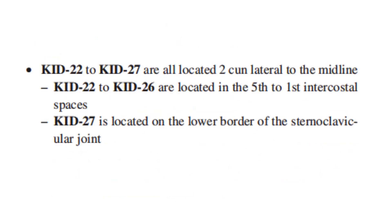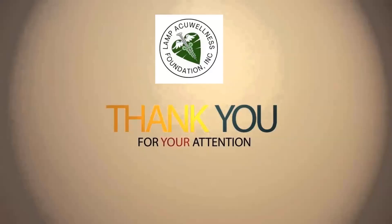Kidney 22 to Kidney 27 are located in the 5th to the 1st intercostal spaces. Kidney 27 is located on the lower border of the sternoclavicular joint.